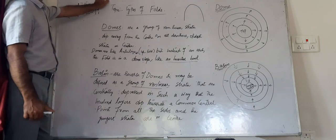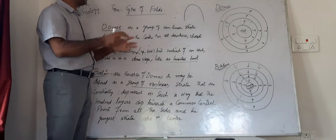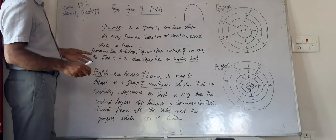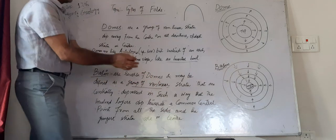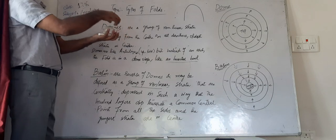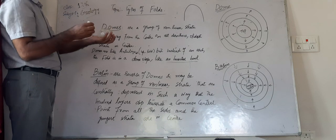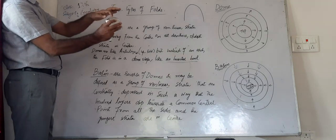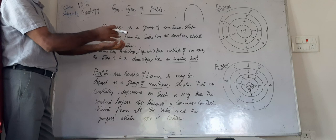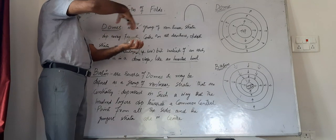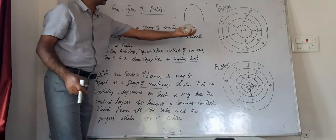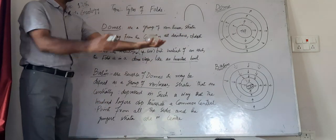Domes are group of nonlinear rock blocks, just like upfolds, anticlines or upright folds. Instead of an arch, this is the shape of a dome fold.